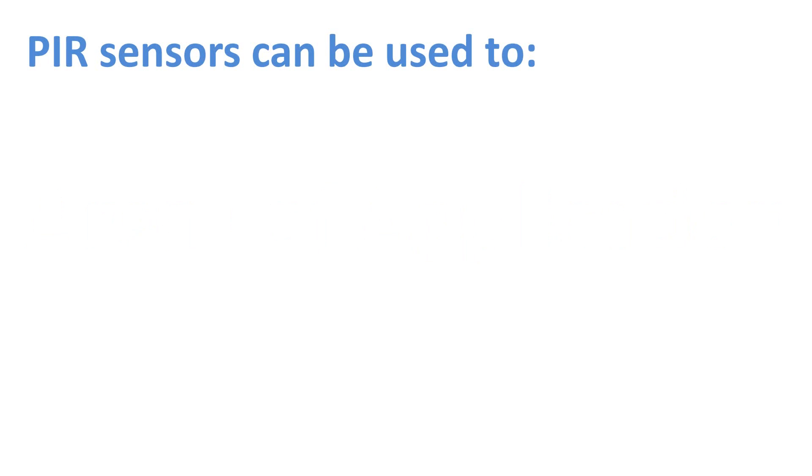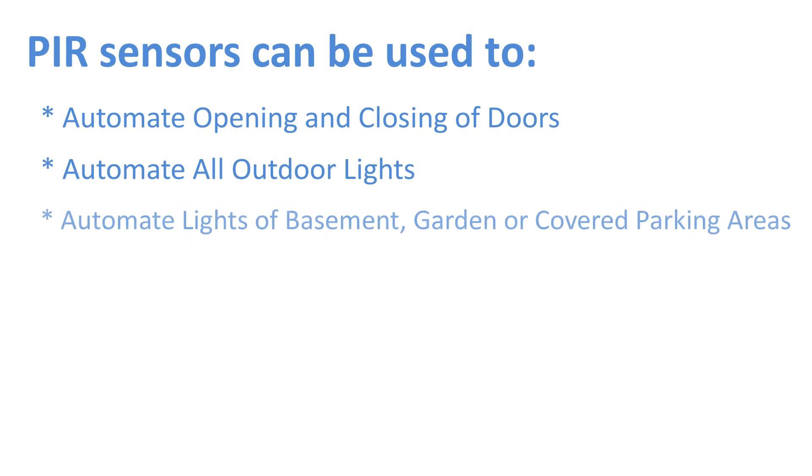PIR sensors can be used to automate opening and closing of doors, automate all outdoor lightings, automate lights of basement, garden and covered parking areas,